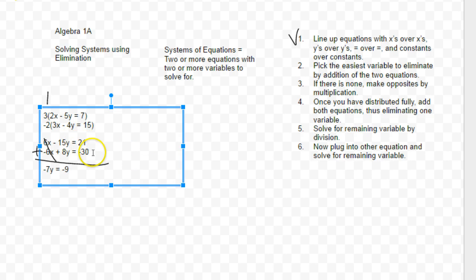Because that's the 21 plus the negative 30. And then what I'm going to do is divide both sides by negative 7, so I get y equals 9 sevenths.